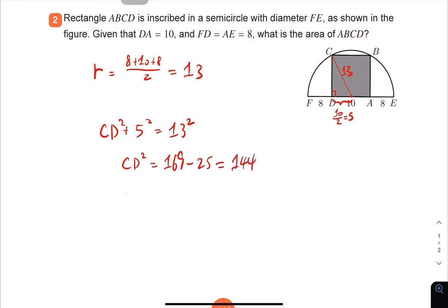CD is equal to 12. Now we know that CD is 12 and AD is 10. We can calculate the area of ABCD by length times width, which is 12 times 10, and that's 120 square units. That's extensive challenges question 2. Thank you.